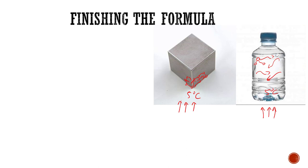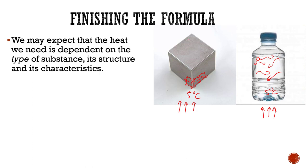Simply the structure of these objects is very different — one's a solid in a lattice, one's a liquid with molecules moving around. We could even have something like glass, which is an amorphous solid and not a perfectly cut-out lattice. Overall, it seems to be the case that the characteristics of these objects also influence what final temperature they arrive at after giving them a certain amount of heat. We may expect that the heat we need is dependent on the type of substance, its structure, and its characteristics. These can't be predetermined without quantum mechanical study — we typically find them via experiment.